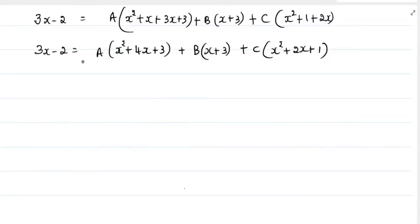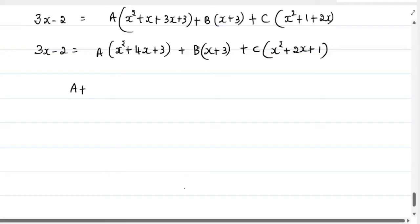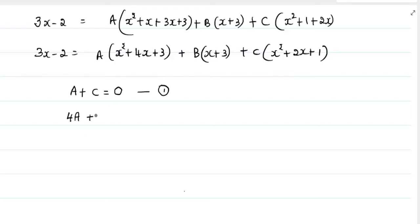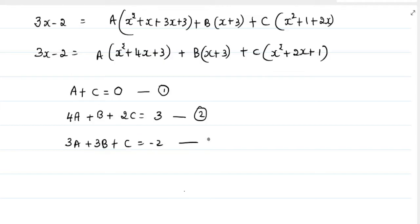Now we will compare the coefficients of x squared, x, and the constant terms on both sides. The coefficient of x squared gives A plus C equals 0 — this is equation 1. Comparing coefficients of x gives 4A plus B plus 2C equals 3 — this is equation 2. The constant terms give 3A plus 3B plus C equals minus 2 — this is equation 3.